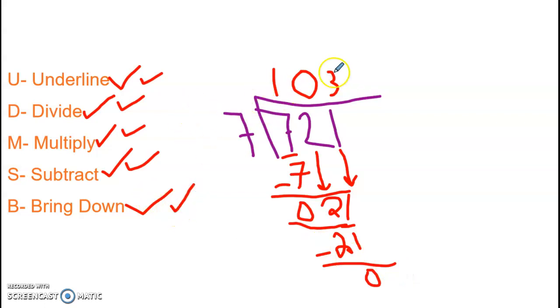Friends, if I wouldn't have put that 0 in, I would have thought that 7 goes into 721 only 13 times. That just doesn't make sense. So if you underline and brought down a number and your divisor cannot go into it, like 7 couldn't go into 2, you have to put a 0 there and then you can bring down.